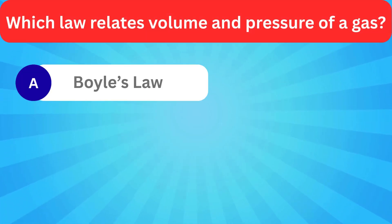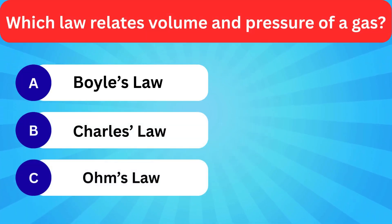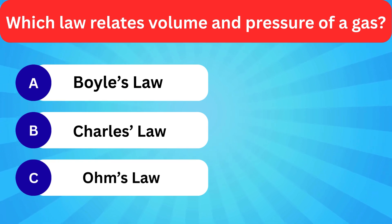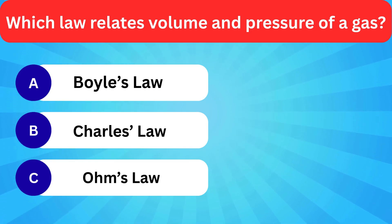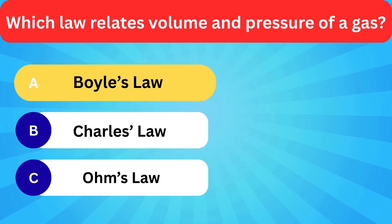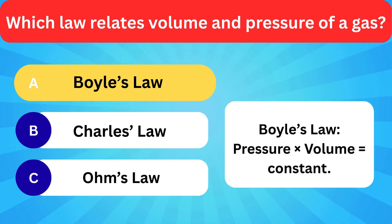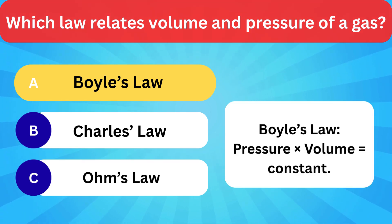Which law relates volume and pressure of a gas? Options: Boyle's law, Charles' law, Ohm's law. Correct answer is Boyle's law. Pressure × volume = constant.